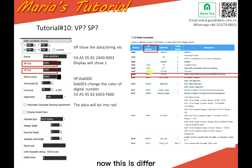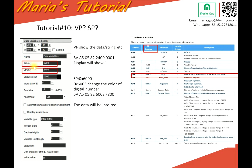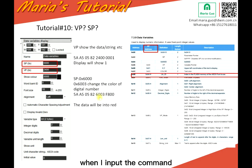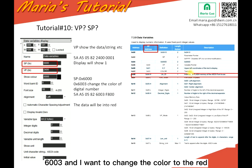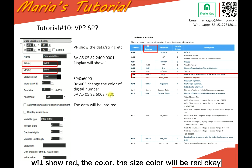VP address differs by 3, which means it controls color — you can change the color. So when I input the command 6003 and I want to change the color to red, this is the red code. If I send such a command, the display will show red — the text color will be red.